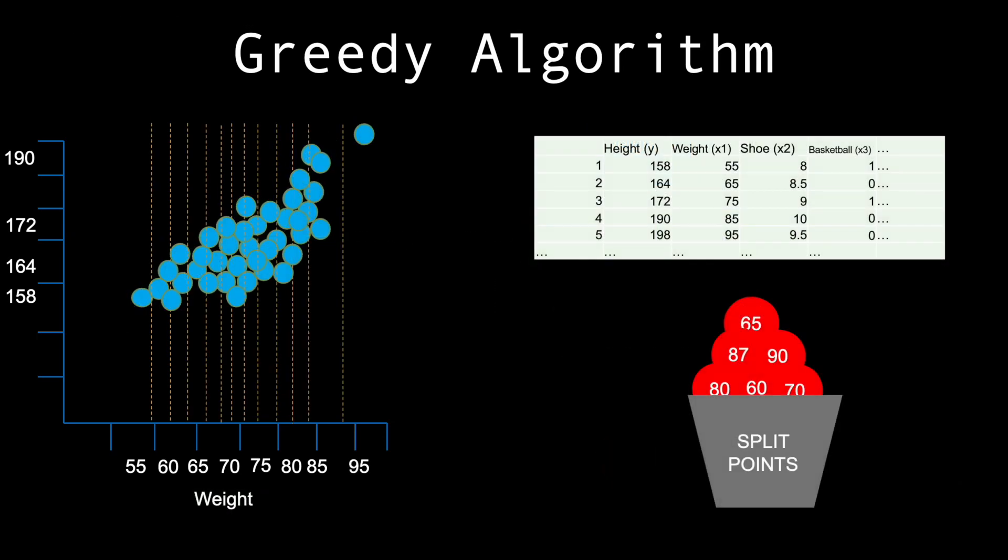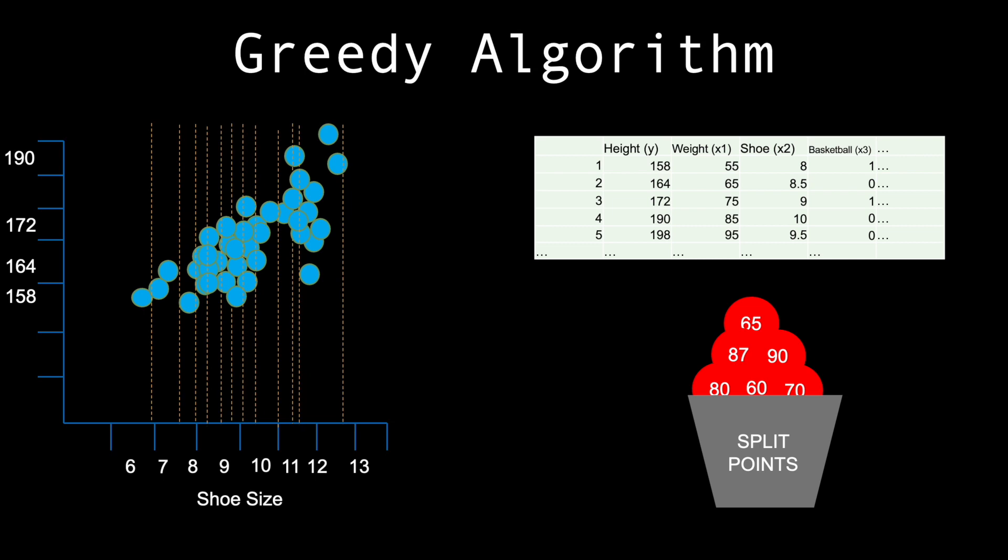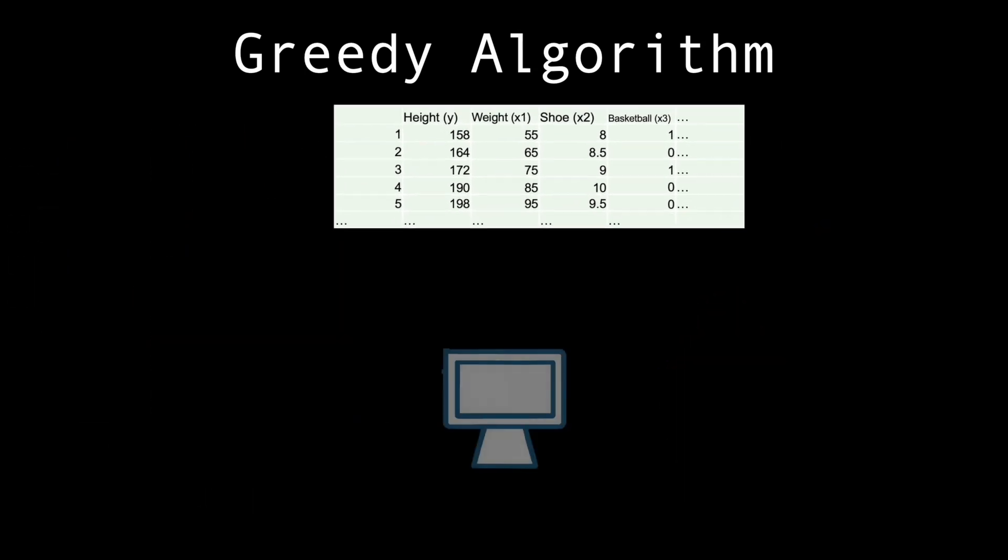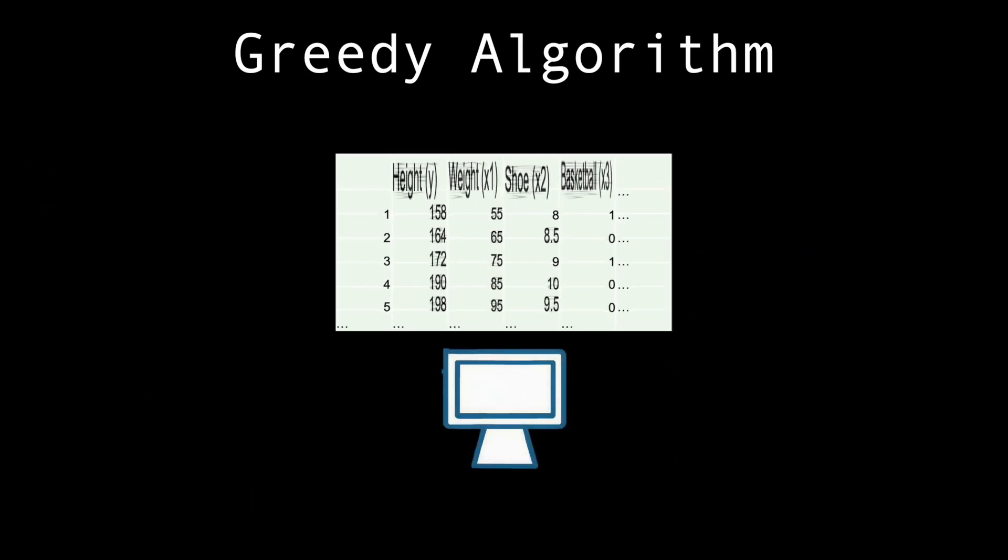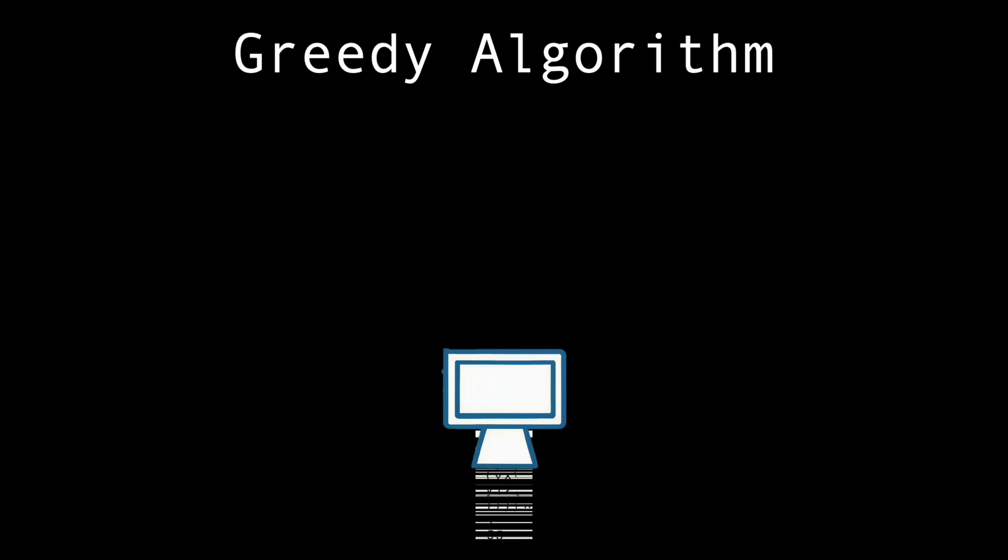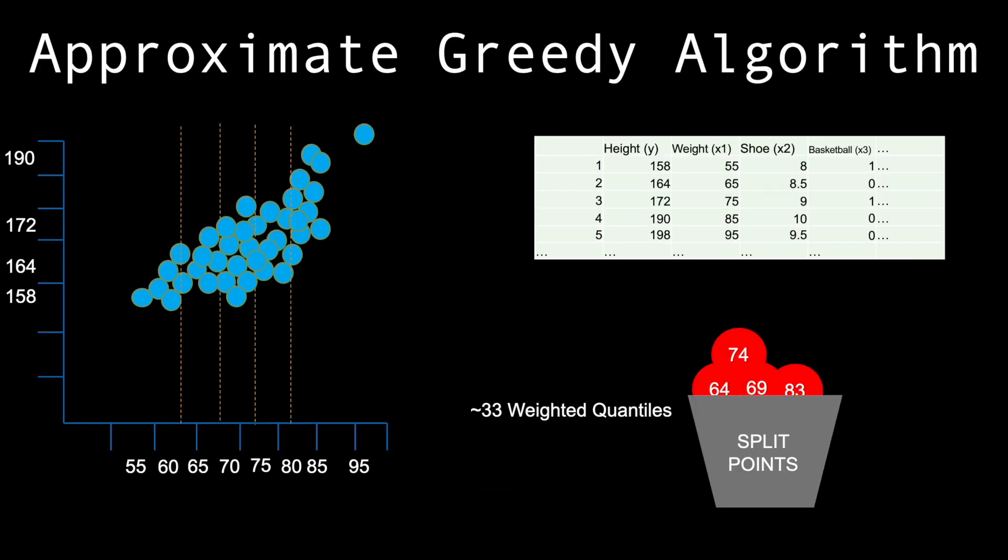The issue is, the greedy algorithm compares every possible split point on every possible feature. It's too slow, and the data is so large it doesn't all fit in computer memory anyway. We need a better way of finding fewer split points to optimize this discrete variable.